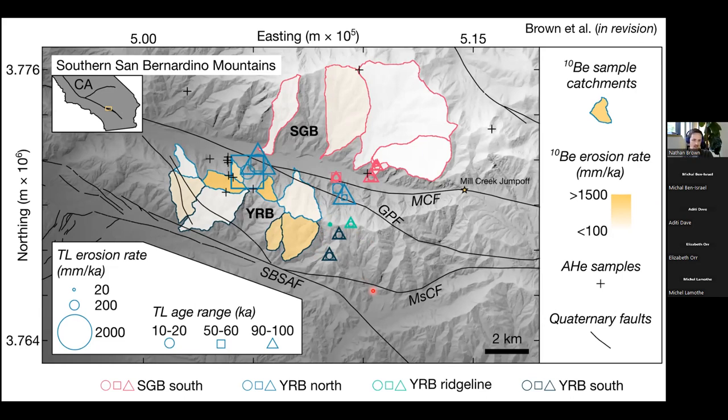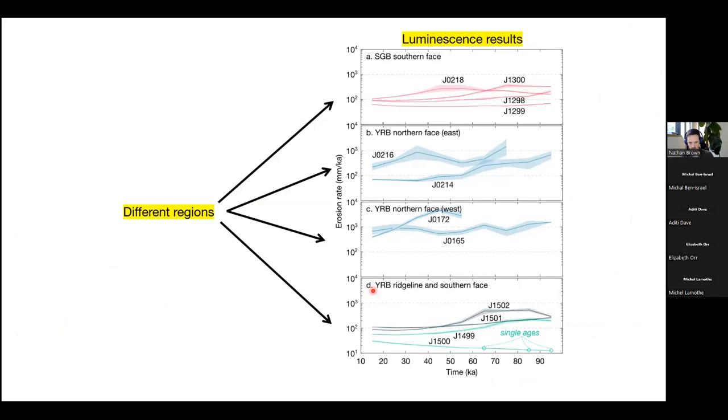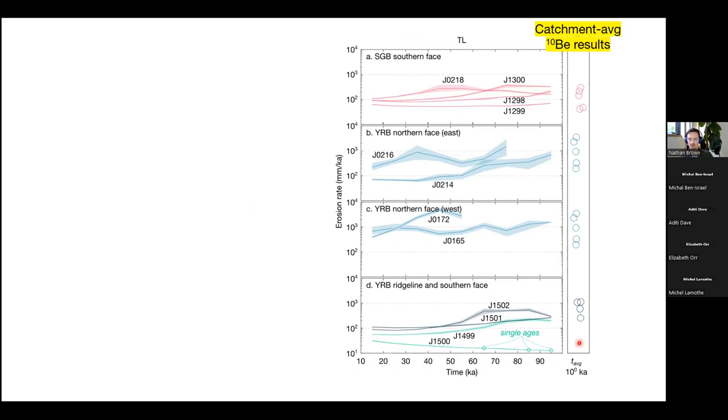So one way that we can digest these erosion rates is just to compare them like this. So what you're going to look at now are the luminescence erosion rates for different regions. So each row is a different region in this area. And the x-axis is the averaging time scale for these measurements. So you have one averaging time scale for each bin. And it ranges from 10 to 100,000 years. Then next to this, we can plot up the catchment averaged beryllium 10 erosion rates. So these will have an averaging time scale of about a thousand years, given how rapidly it's exhuming.